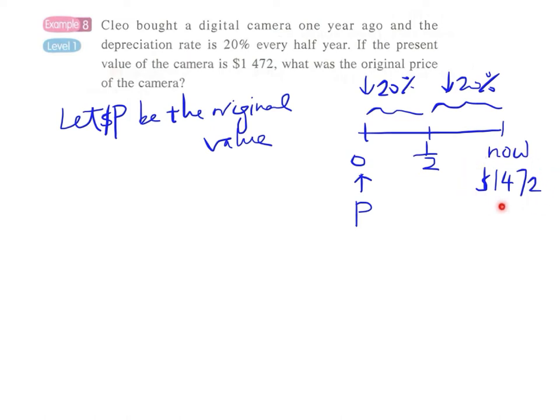...will be equal to 1472 dollars. Therefore we can write an equation: P times (1 minus 20 percent) to the power 2 equals 1472. And this part we can make use of our calculator to find out its value.